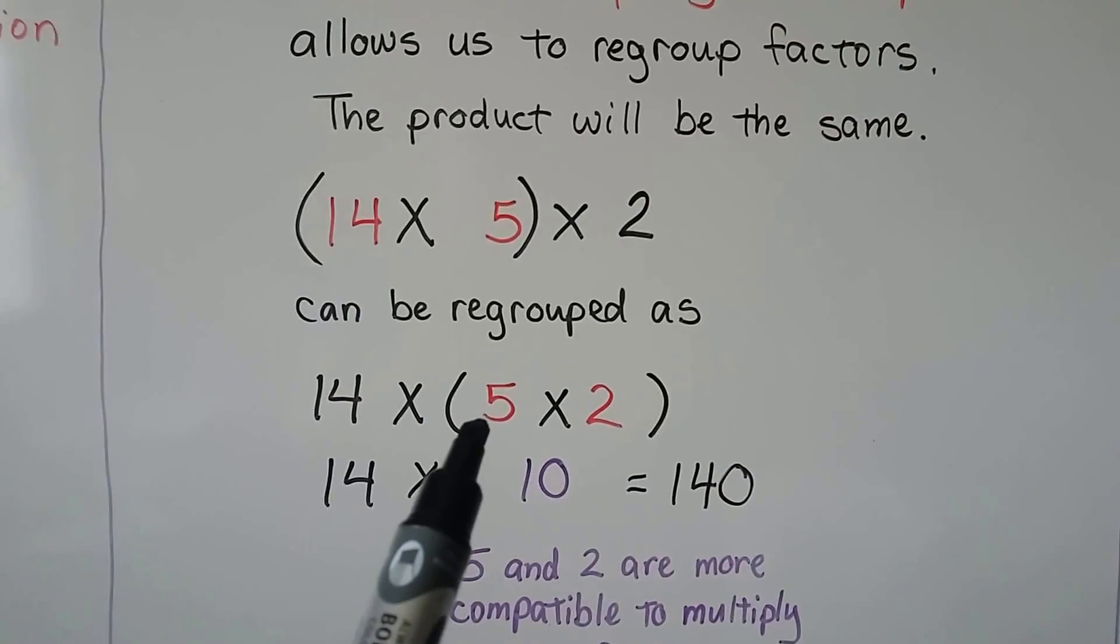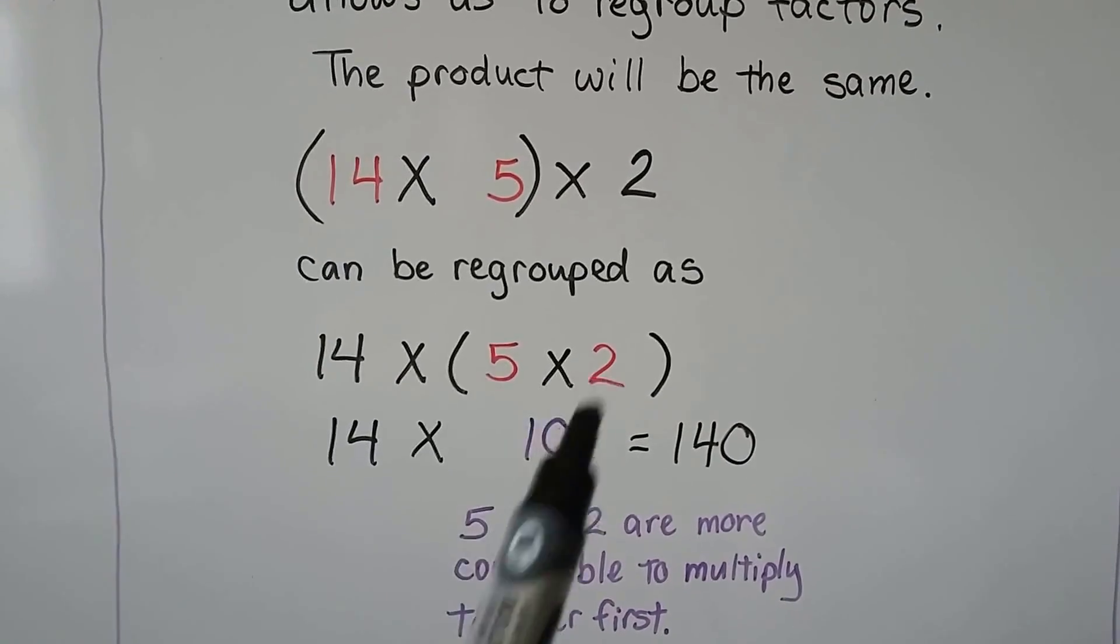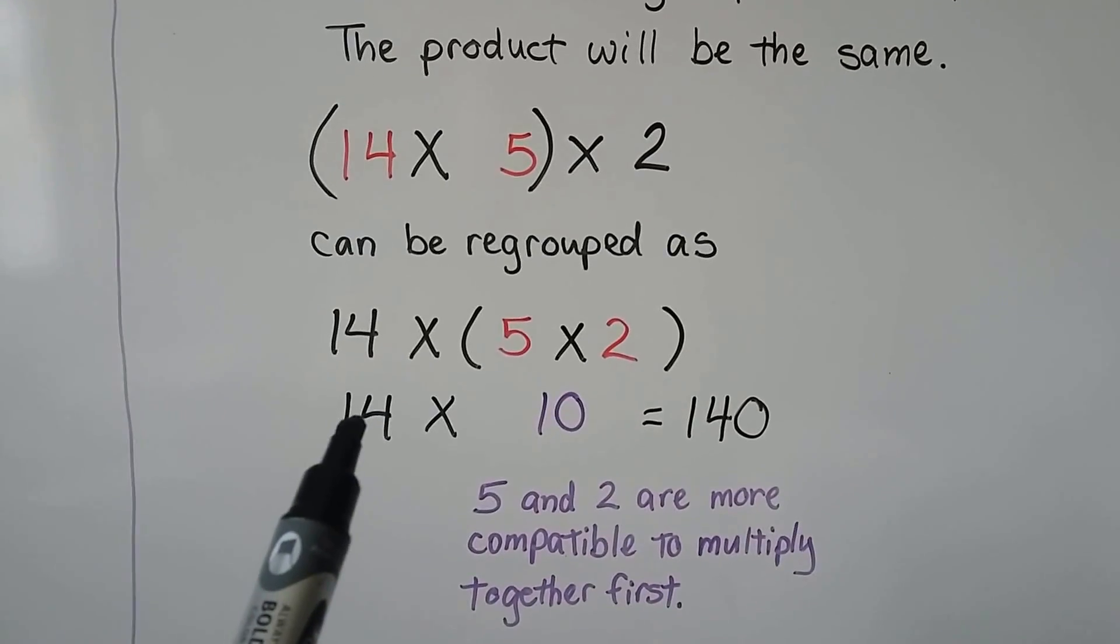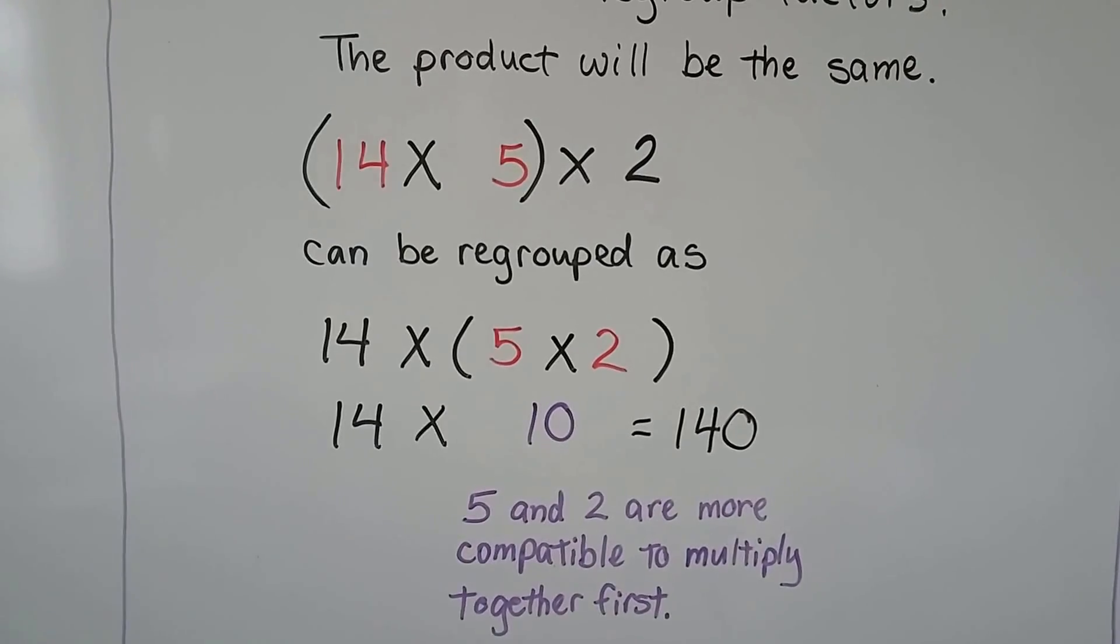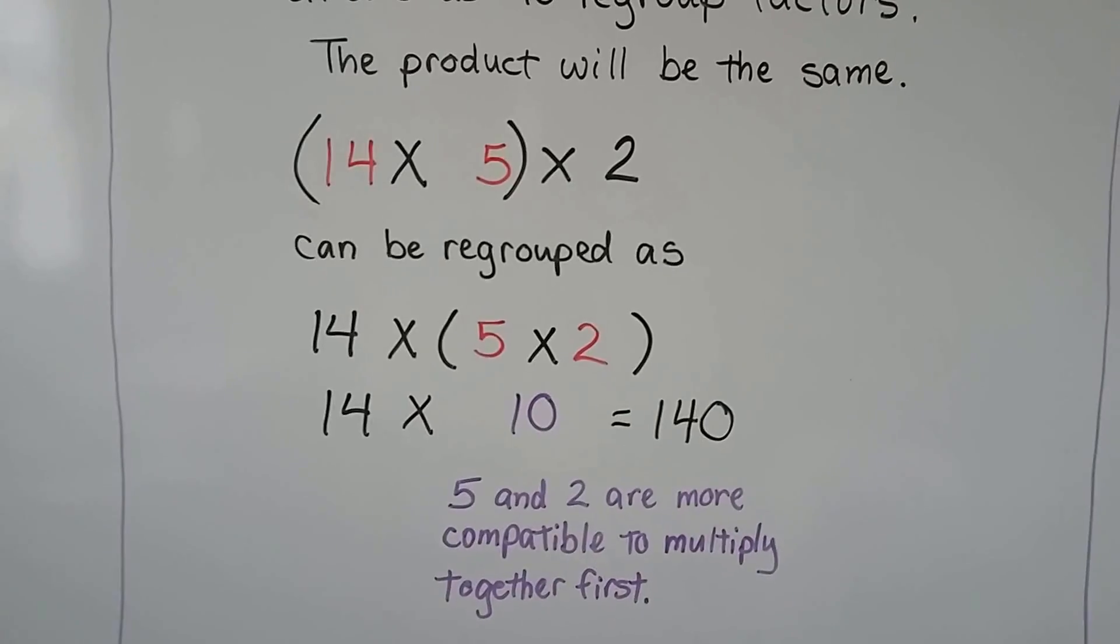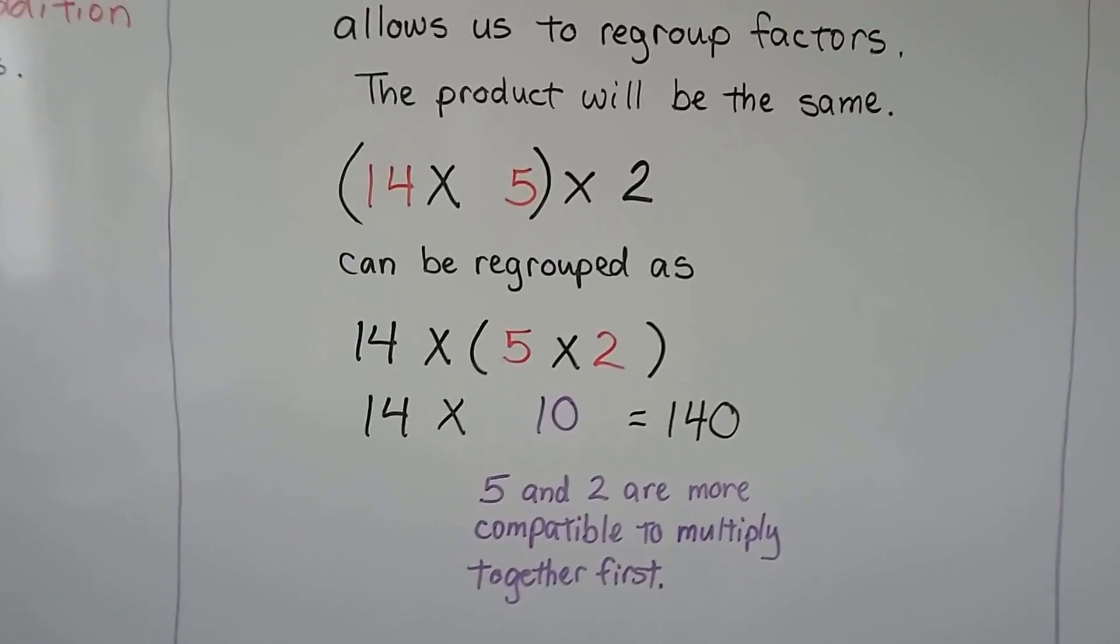we can regroup it as 5 times 2 and do this first and get a 10, then multiply it by 14, which is 140. So 5 and 2 are more compatible to multiply together first.